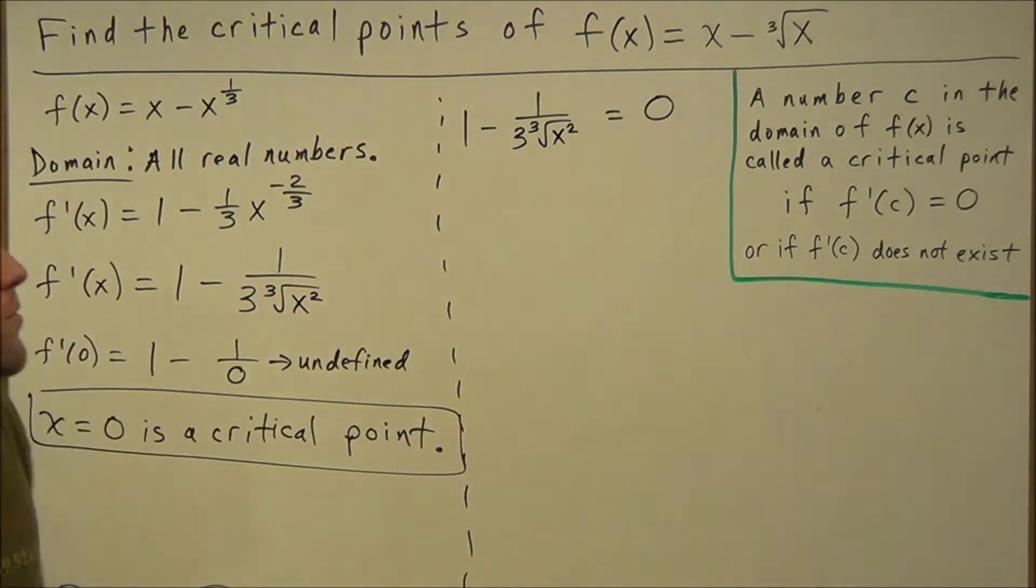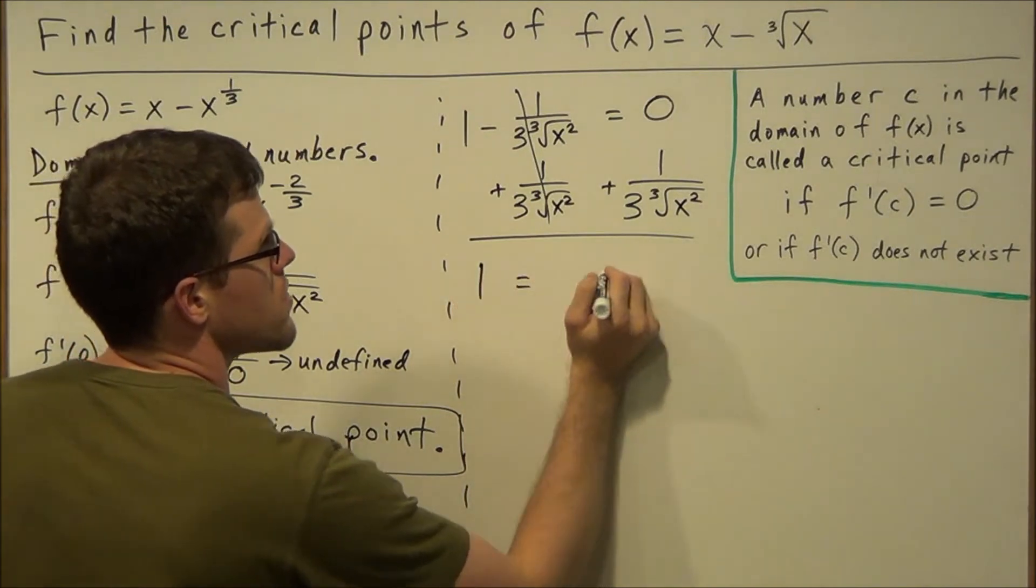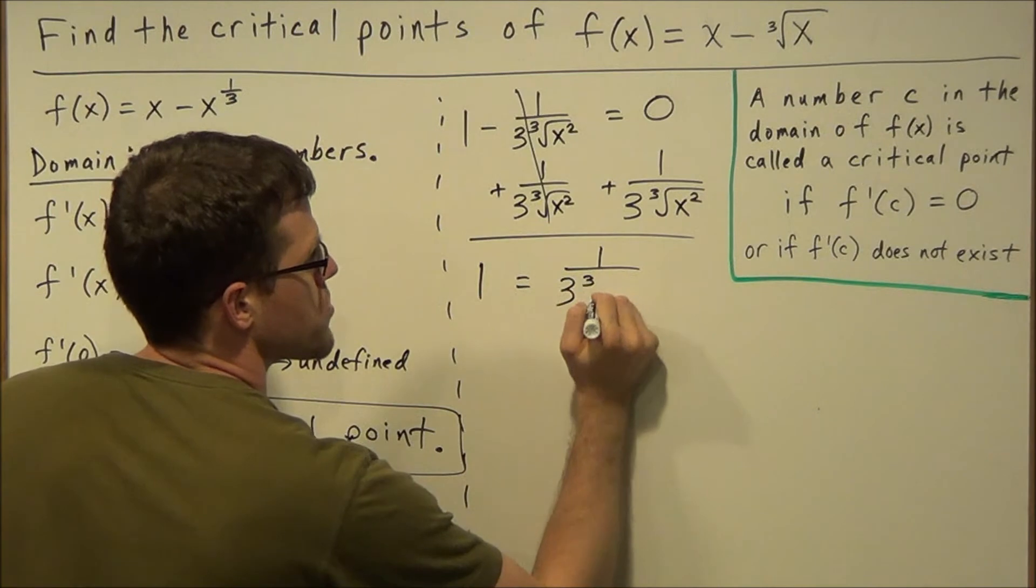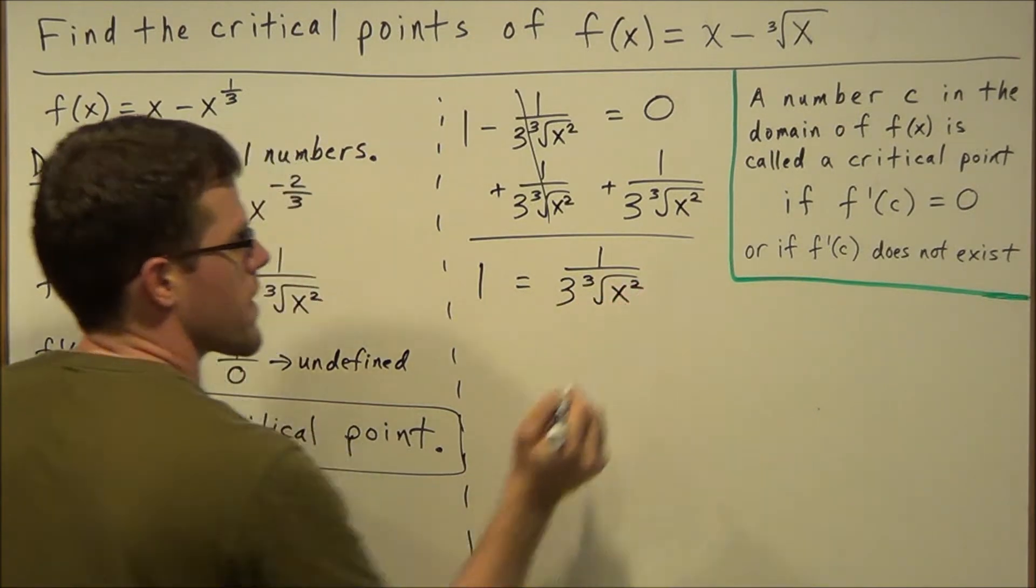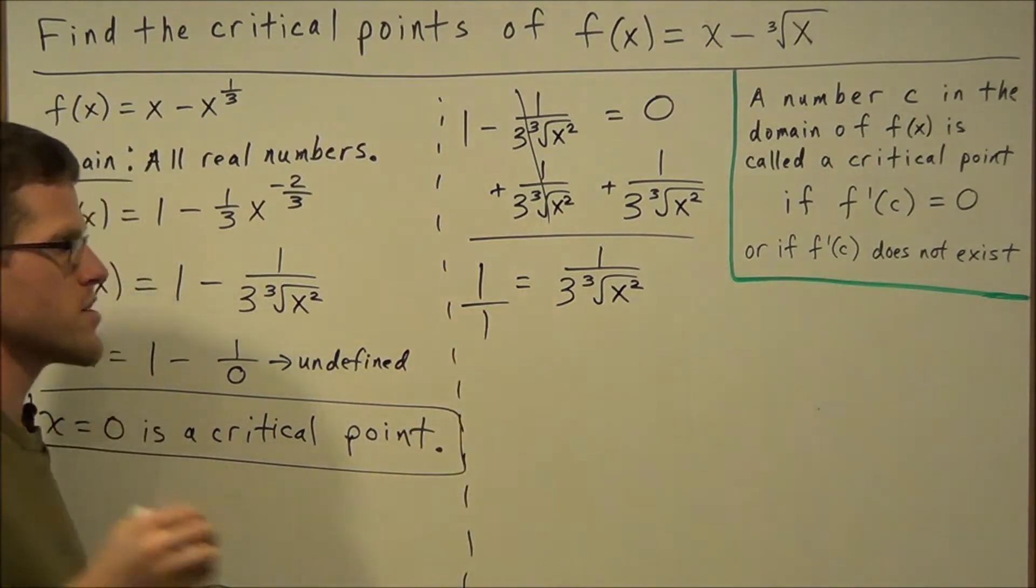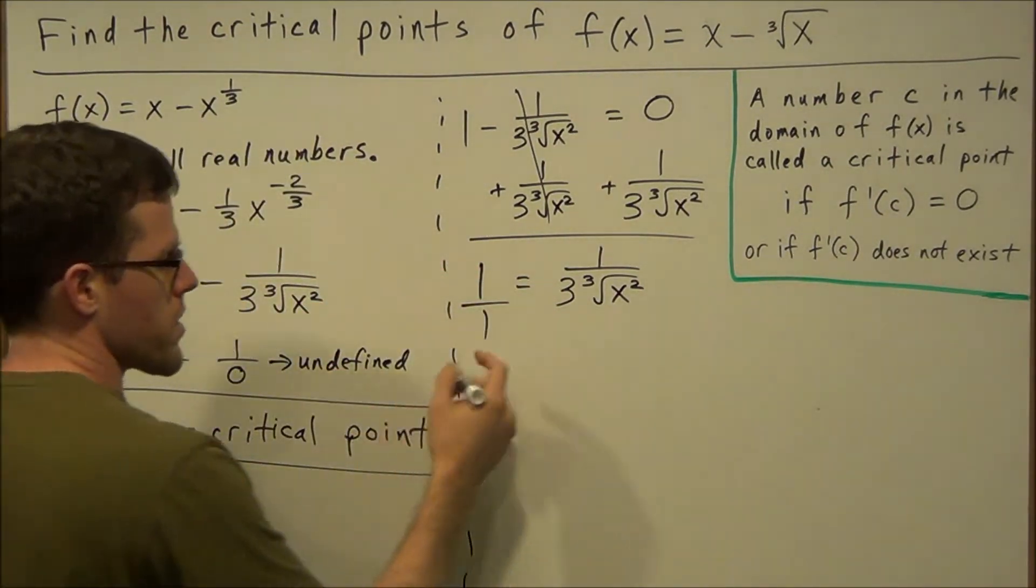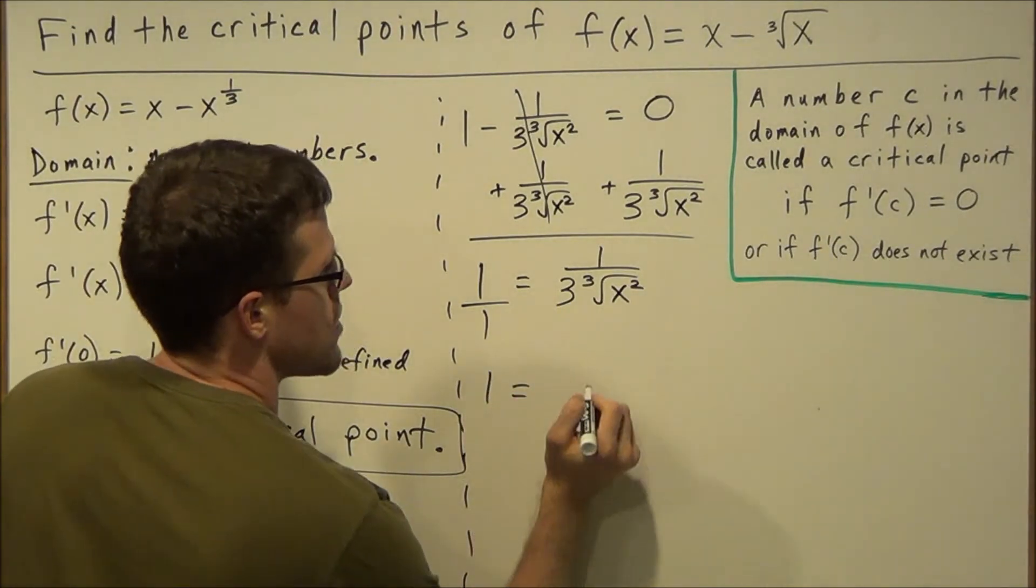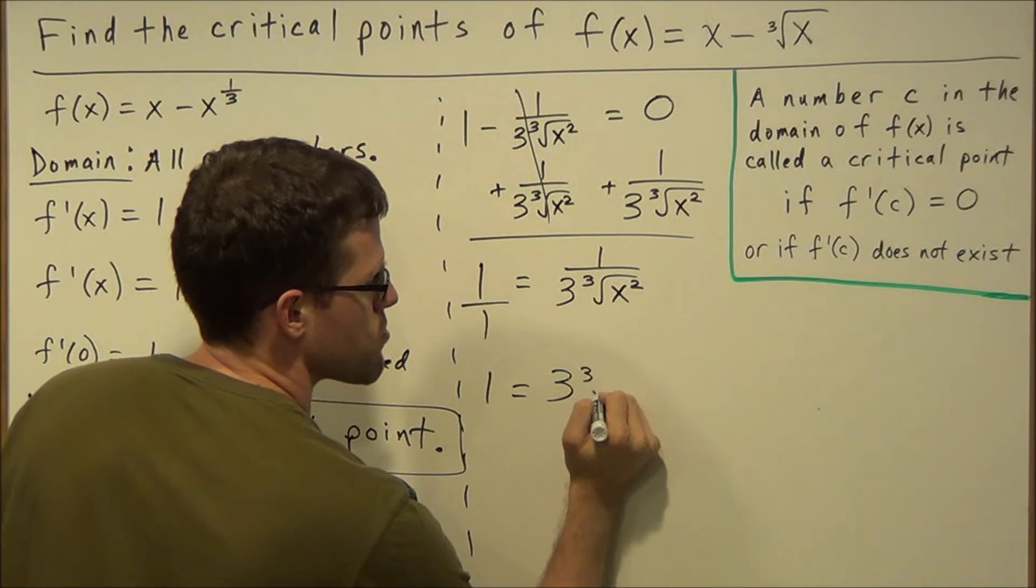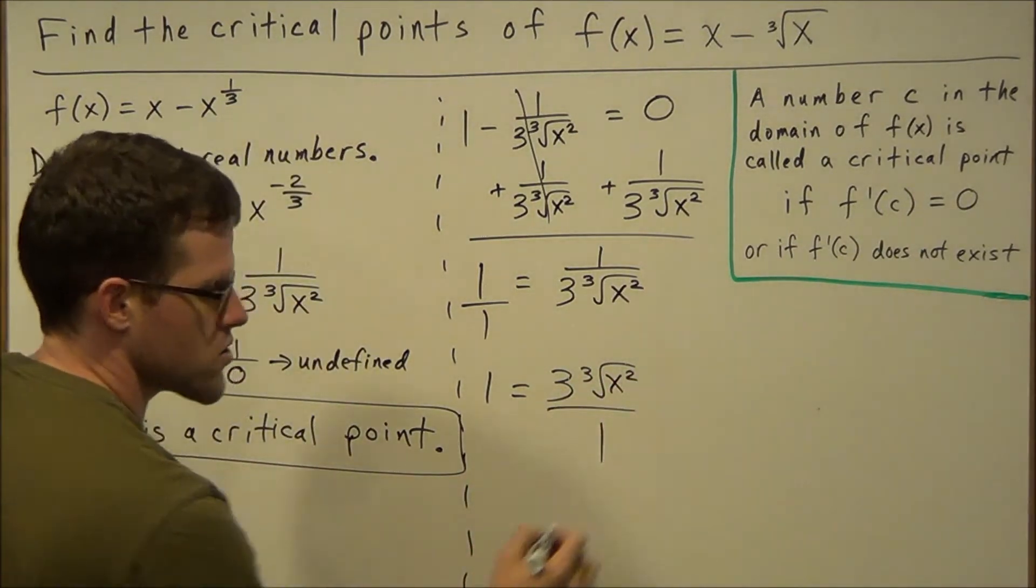We could add this term over to both sides and we'll have 1 equals 1 over 3 times the cube root of x squared. When we have one fraction equal to another fraction, we could take the reciprocal of both sides. So now we're going to write this as 1 over 1 equals 3 times the cube root of x squared.